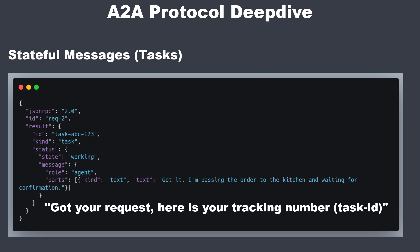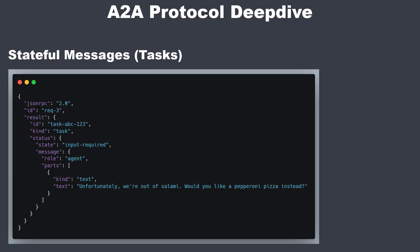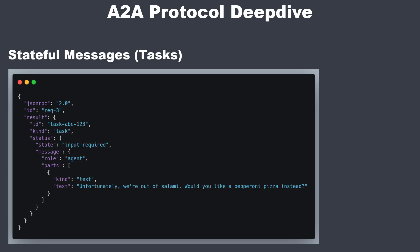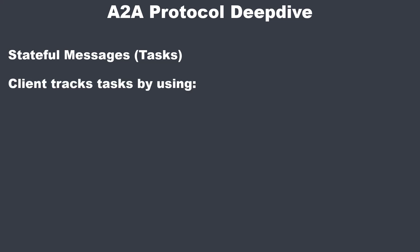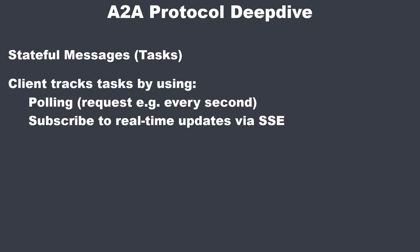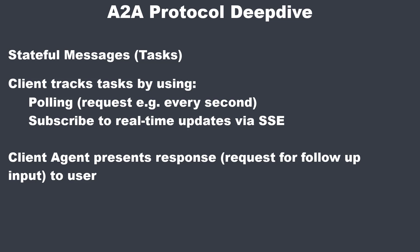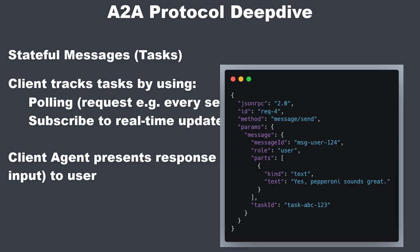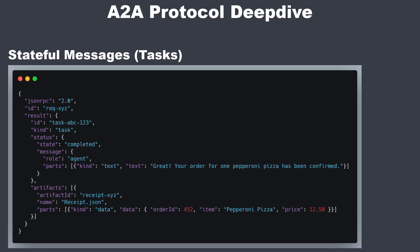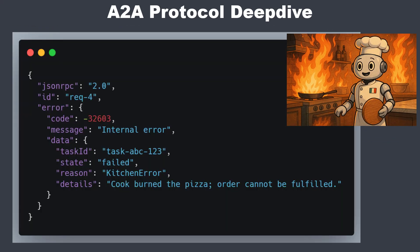But now reality kicks in: the kitchen reports they're out of salami. The restaurant agent changes the task status to input required and attaches a message: 'Unfortunately we're out of salami. Would you like a pepperoni pizza instead?' The client agent, which is monitoring the task, gets the status update — for example, using polling via task get, or by subscribing to real-time updates using message/stream. The client agent presents the question to the user and sends the reply with the task ID. After the kitchen confirms the corrected order, the restaurant agent sets the task to complete. And if something goes wrong, A2A provides standardized error codes so the client knows directly what happened.